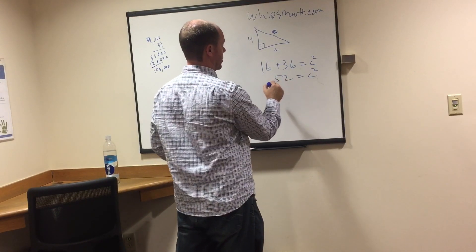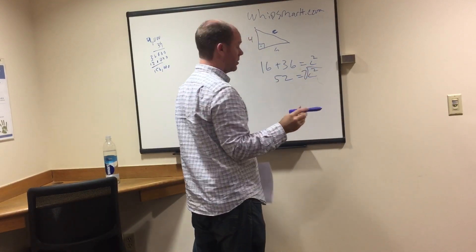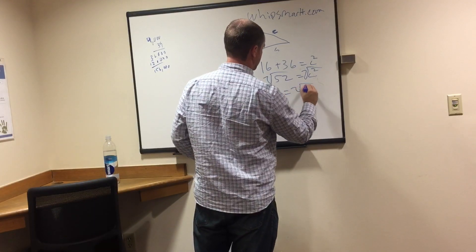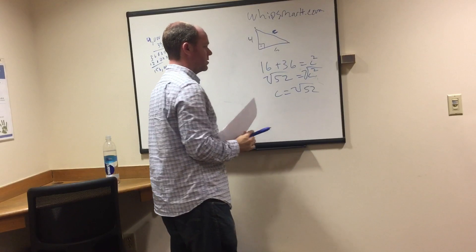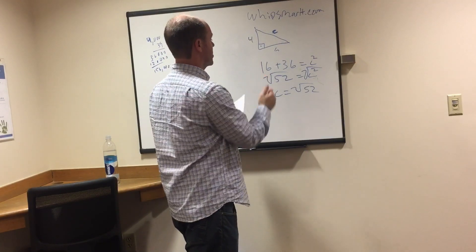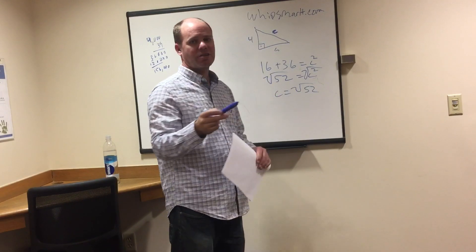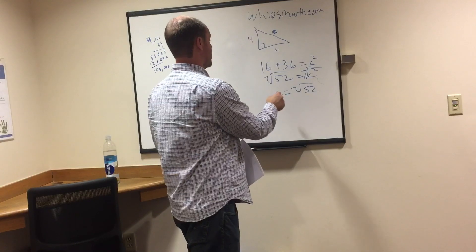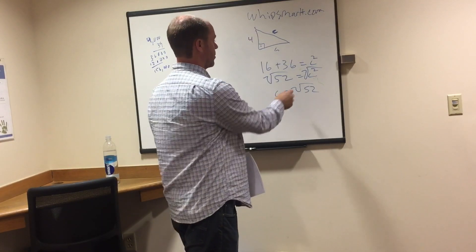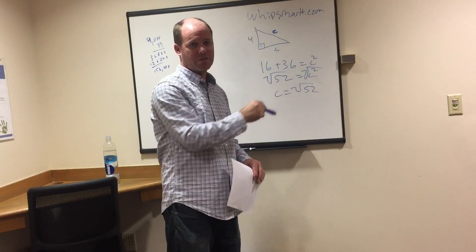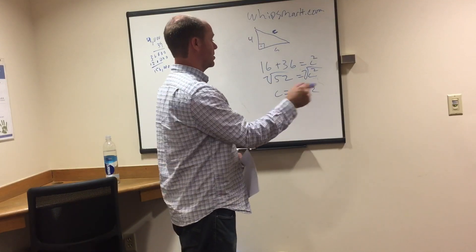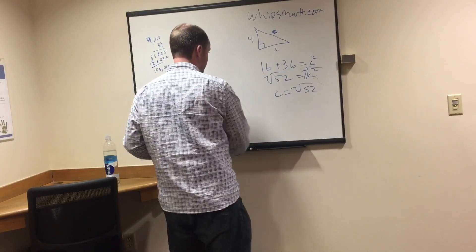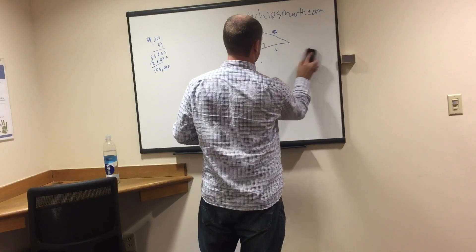To get rid of the squared, we take the square root of both sides: c equals the square root of 52. Another way they might ask this is 'most nearly which whole number' — in that case, the answer is most nearly 7, because the square root of 49 is 7, and the square root of 52 is very close to 7. The square root of 64 equals 8, which is much further away. So the answer is approximately 7.